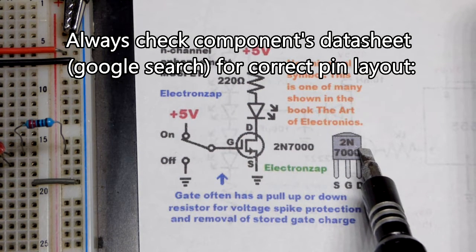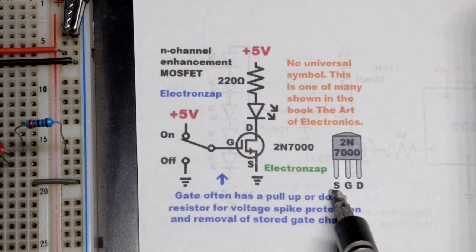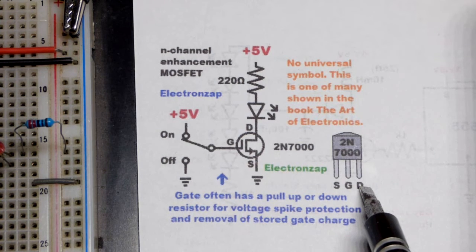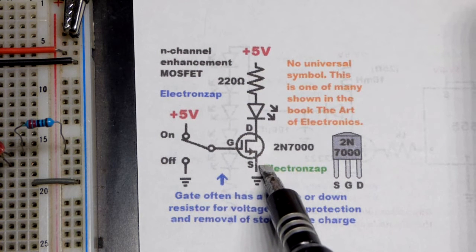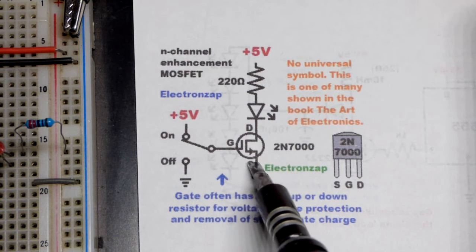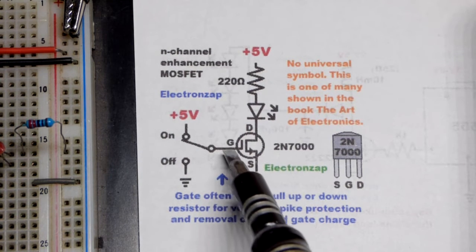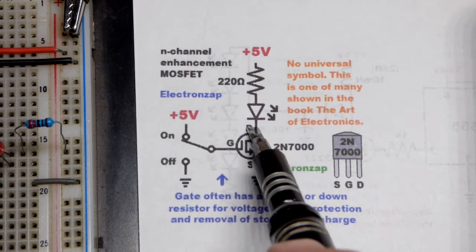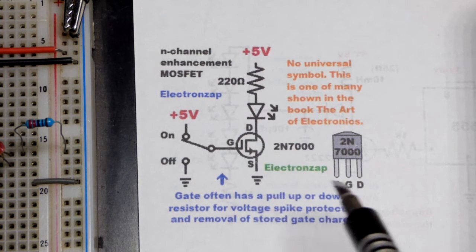It starts with 2N though and we have, you can see left pin is source, middle pin is gate and right pin is drain which actually does align with the bipolar junction transistor. Although it's a different type of transistor. So we got source there to ground, a gate there getting our signal instead of a base, and then a drain going to the positive supply.